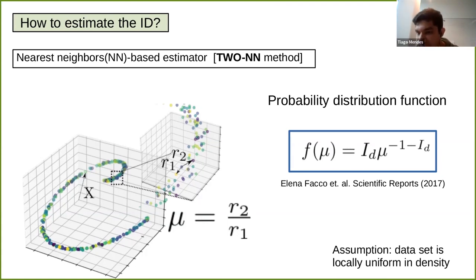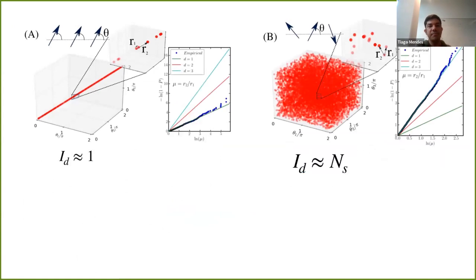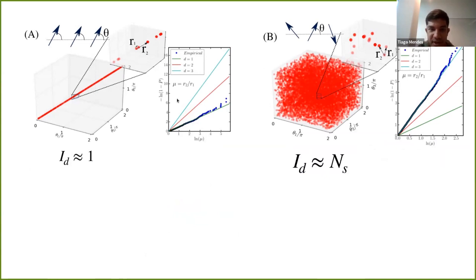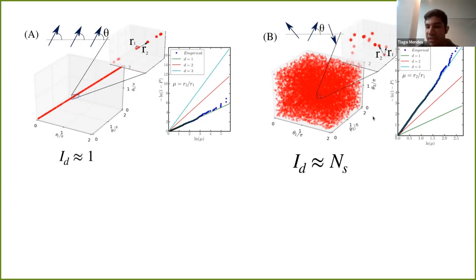If you have a dataset, you compute this probability distribution empirically, fit it to the Pareto expression, and extract the intrinsic dimension. Applied to the simplified XY model with three spins: in the ferromagnetic phase at zero temperature the intrinsic dimension is close to one, and in the high-temperature disordered regime it equals three — matching the number of spins in the dataset.